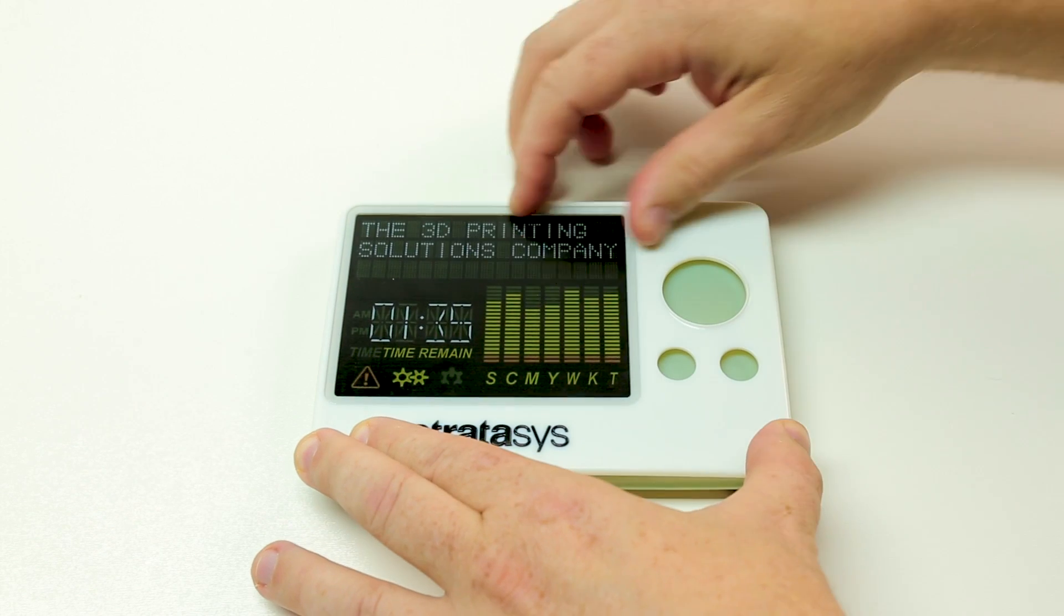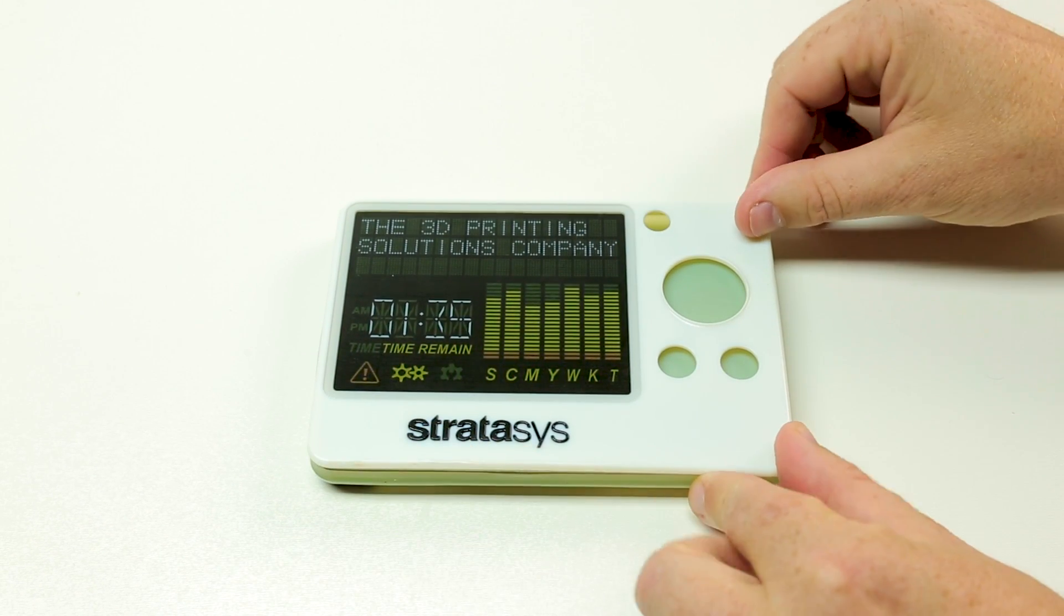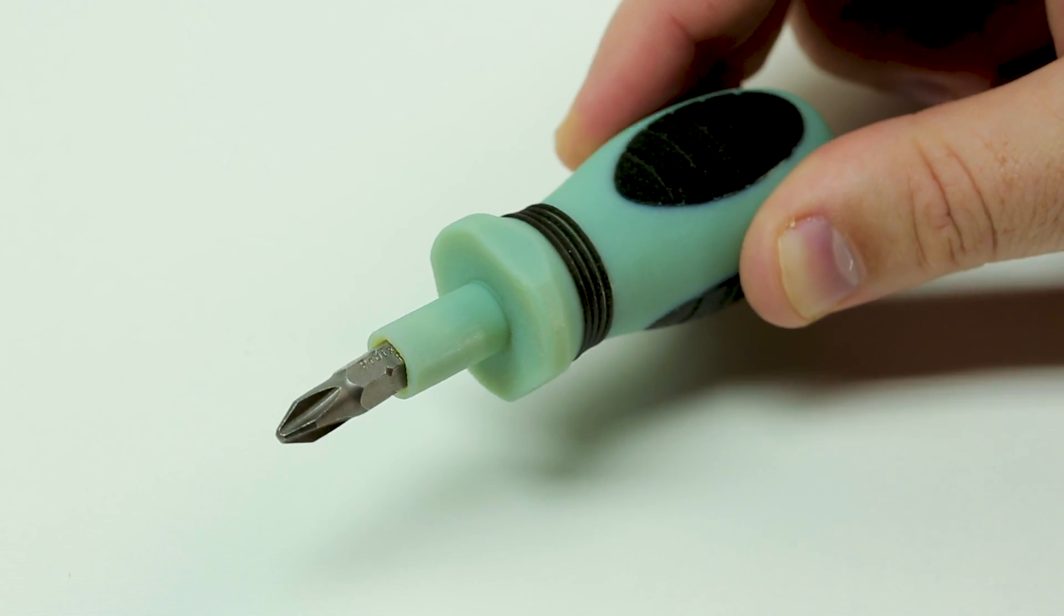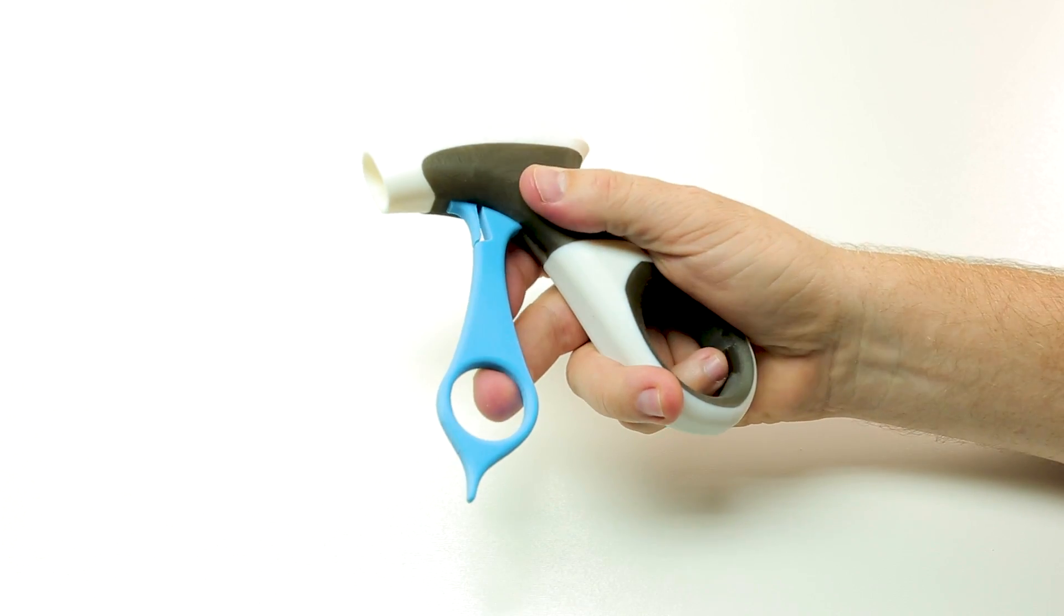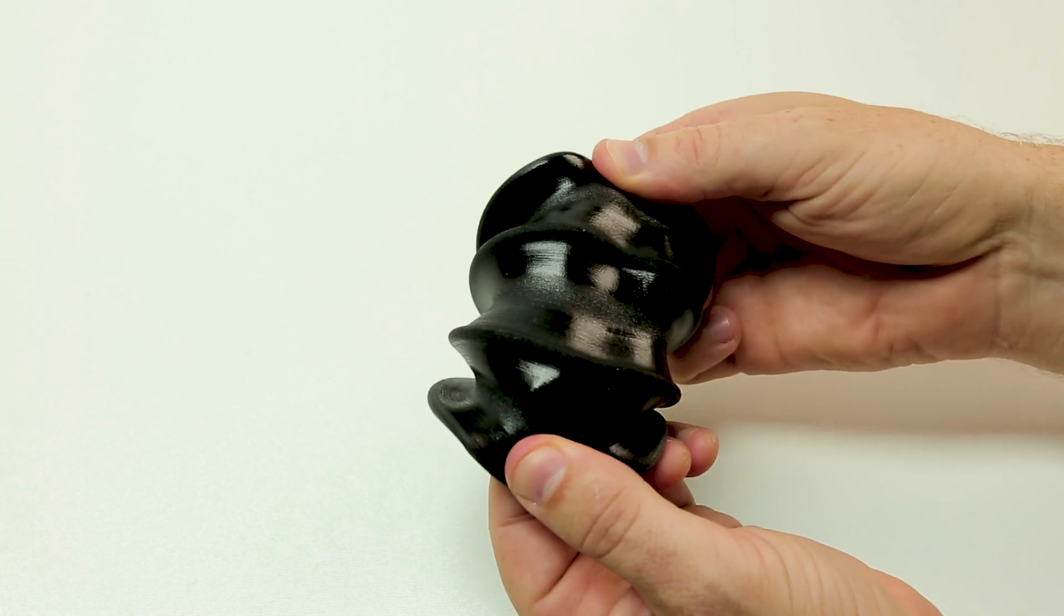The multi-material jetting capability of PolyJet 3D printing allows you to create parts that combine Digital ABS+ with additional materials, such as colors, transparency, or rubber-like elements.